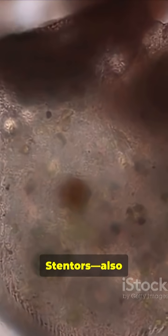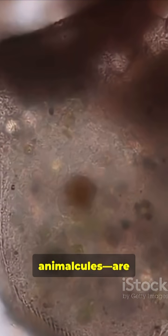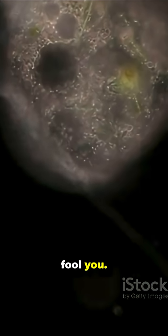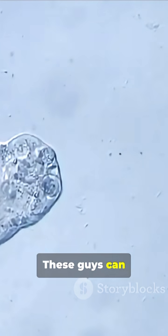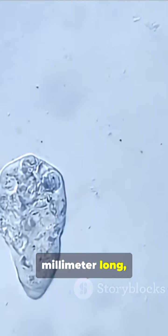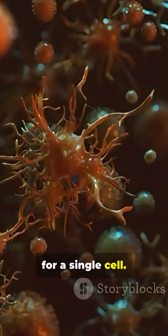Stentors, also called trumpet animalcules, are single-celled critters, but don't let that fool you. These guys can reach up to half a millimeter long, which is ginormous for a single cell.